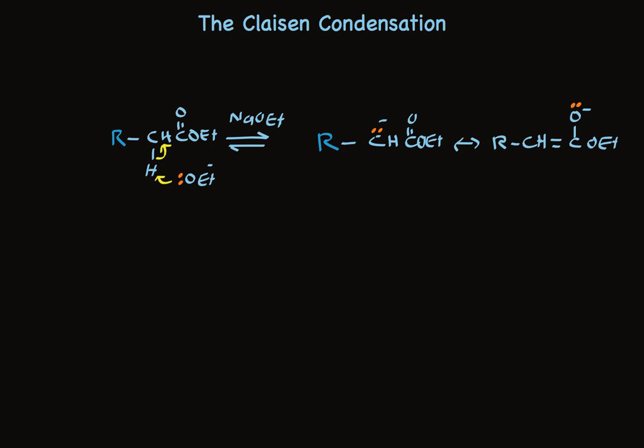Once this enolate has been formed, it can act as a nucleophile reacting with another molecule of ester. We visualize this pair of electrons adding to the carbonyl, pi bond breaks. Carbon-carbon bond is formed. Here I've shown it in tan again.